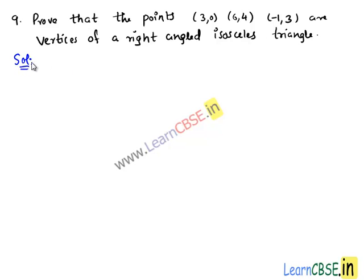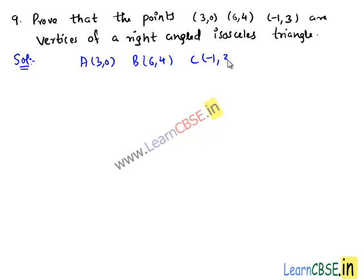In this question, we are given three points: A(3,0), B(6,4), and C(-1,3). We need to prove that these are the vertices of a right-angled isosceles triangle.